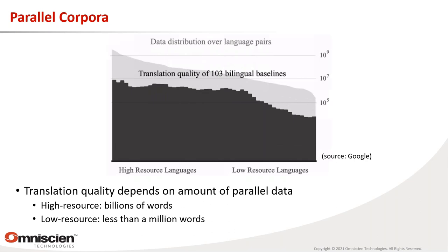A slide from Google illustrates what data sizes they work with and the machine translation performance they achieve. The biggest corpora are around a billion words, as also seen in Paracrawl. But for the lowest-resource languages, they have barely a million words — maybe even less. That has a clear impact on translation quality: performance drifts off significantly for low-resource languages.